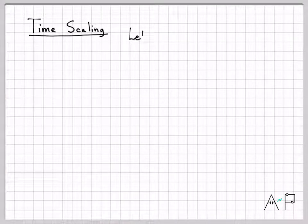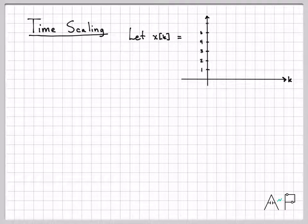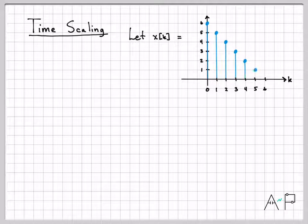Alright, so let's do our time scaling. And for both of these examples, let's plot this signal right here, and we'll use this as our base x of k as our example. So it's a pretty simple signal. It's 0 everywhere, except for times 0 to 5. It kind of counts down, 6, 5, 4, 3, 2, 1. So that's our base signal.